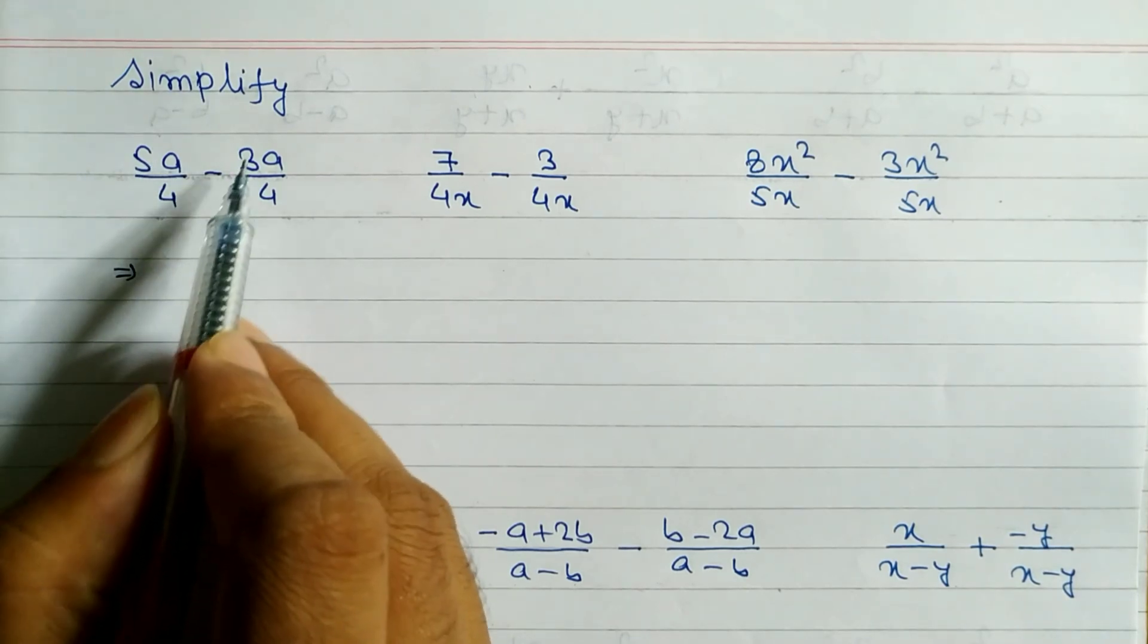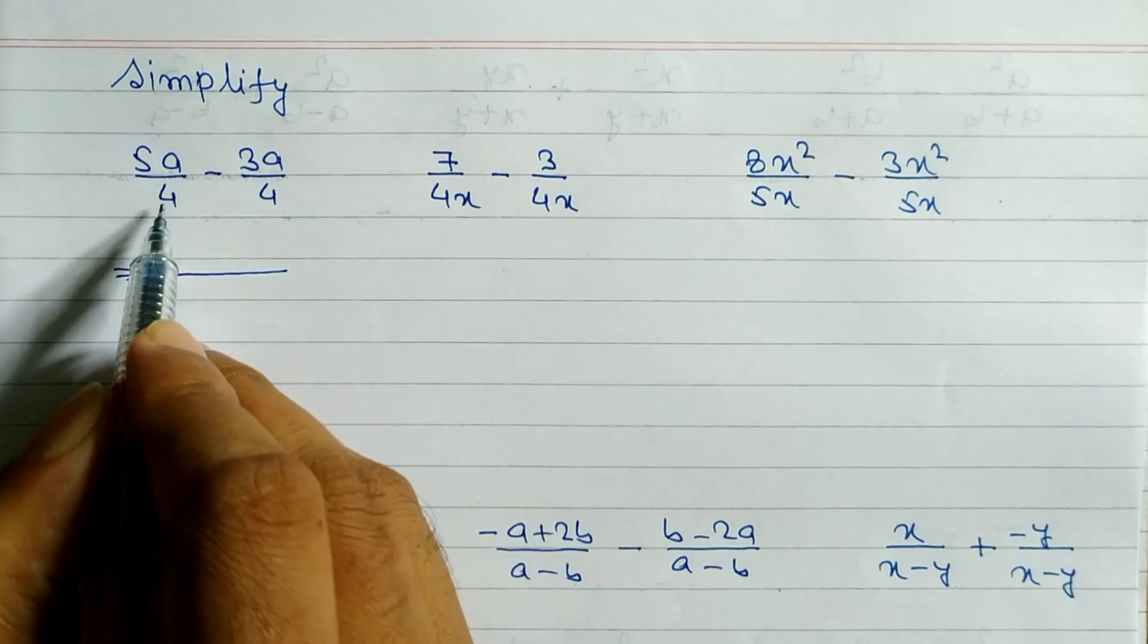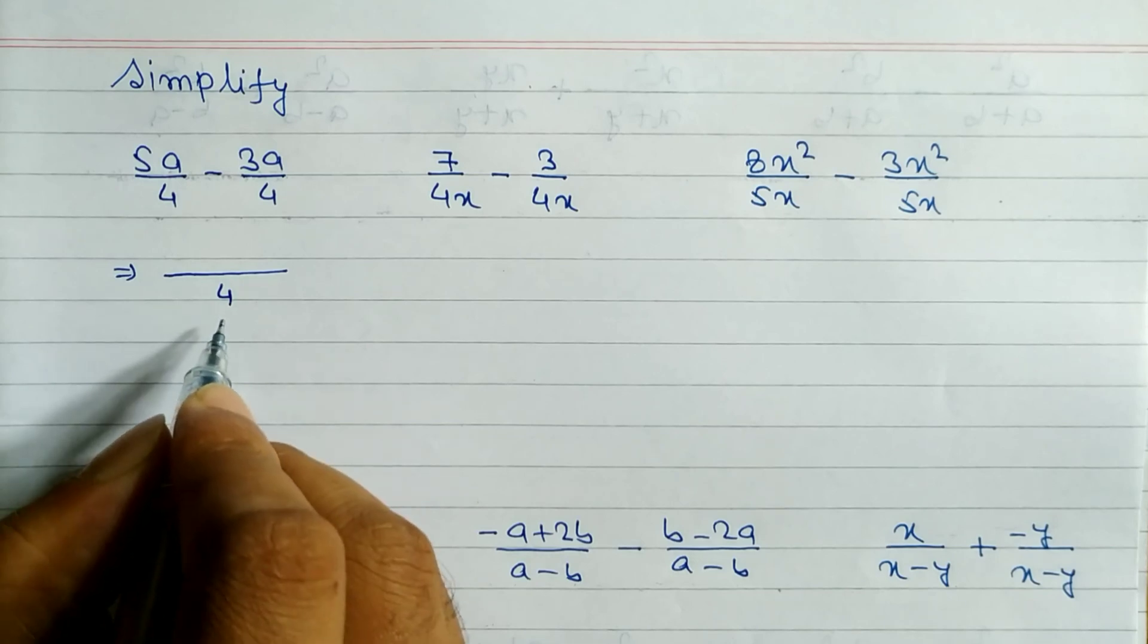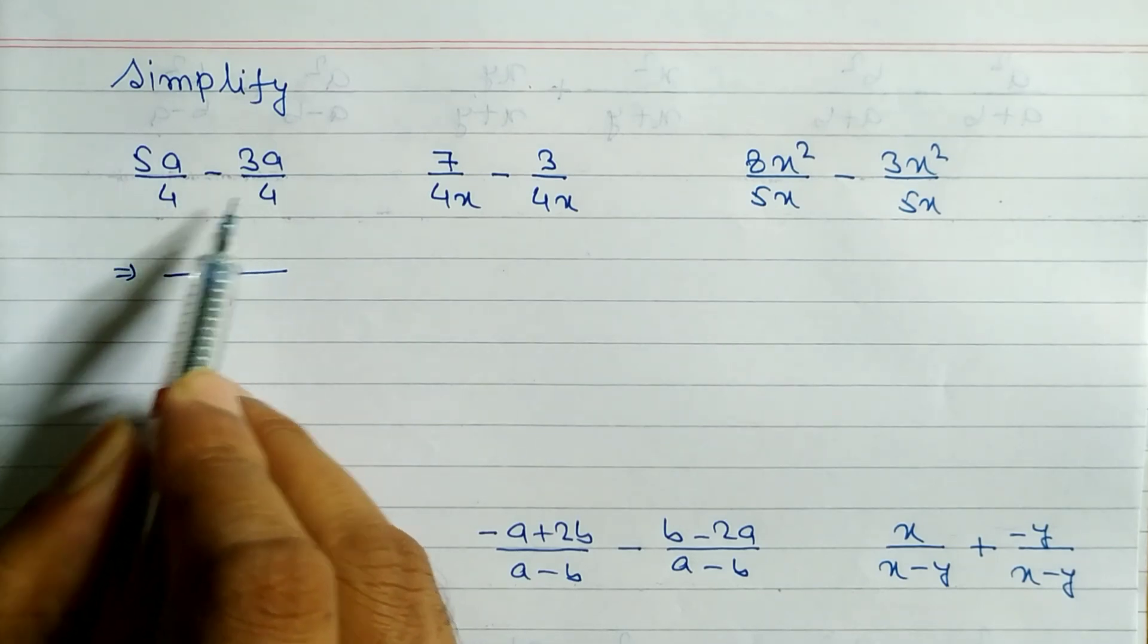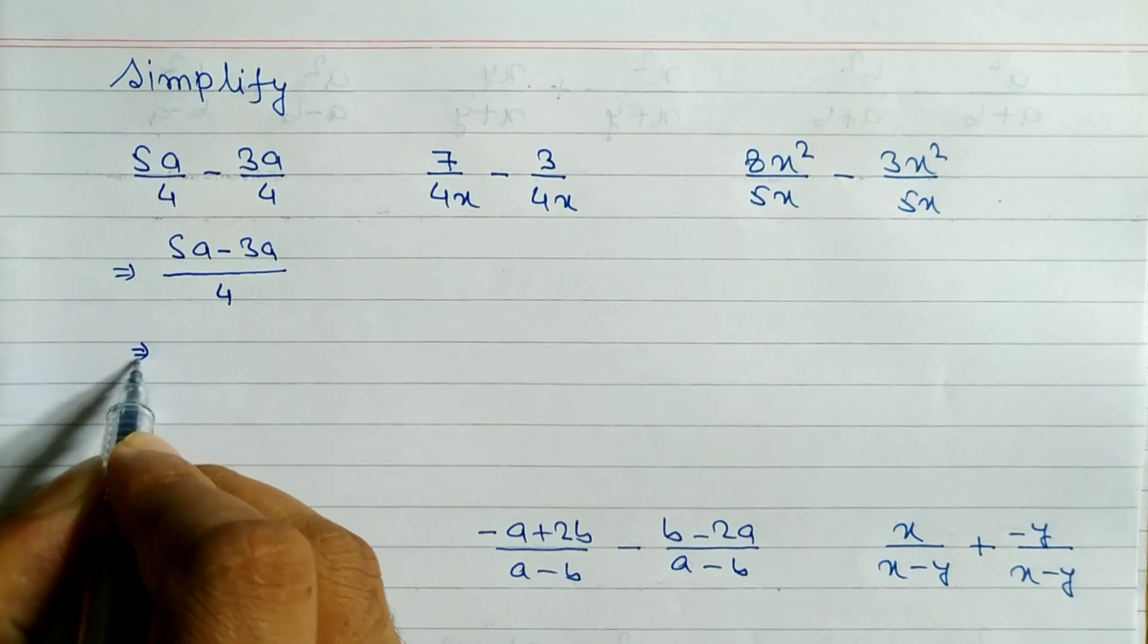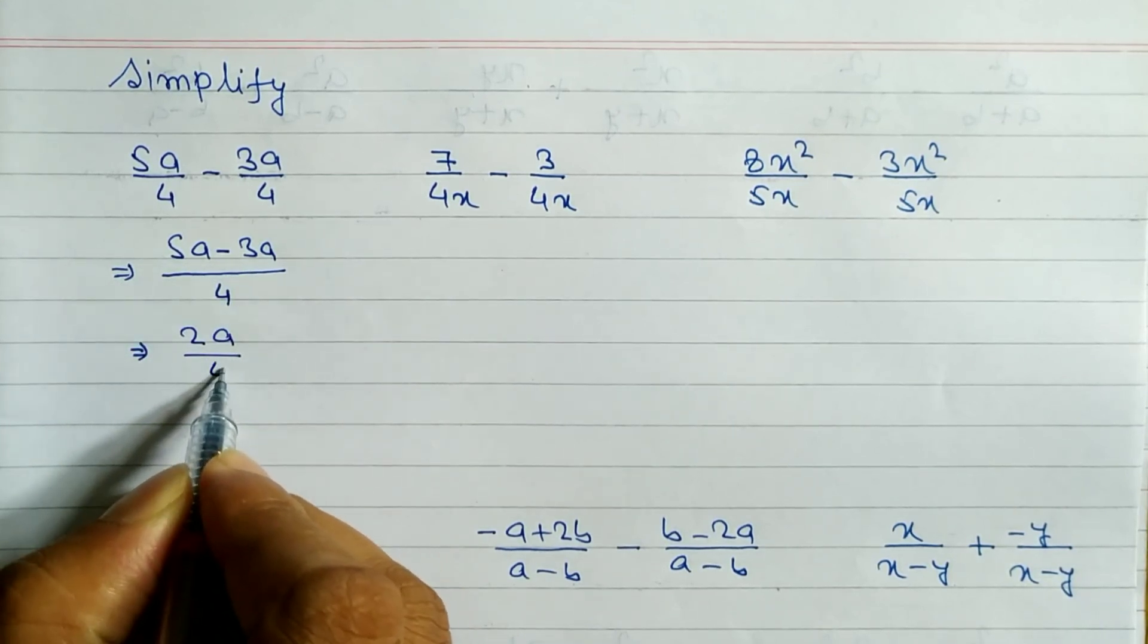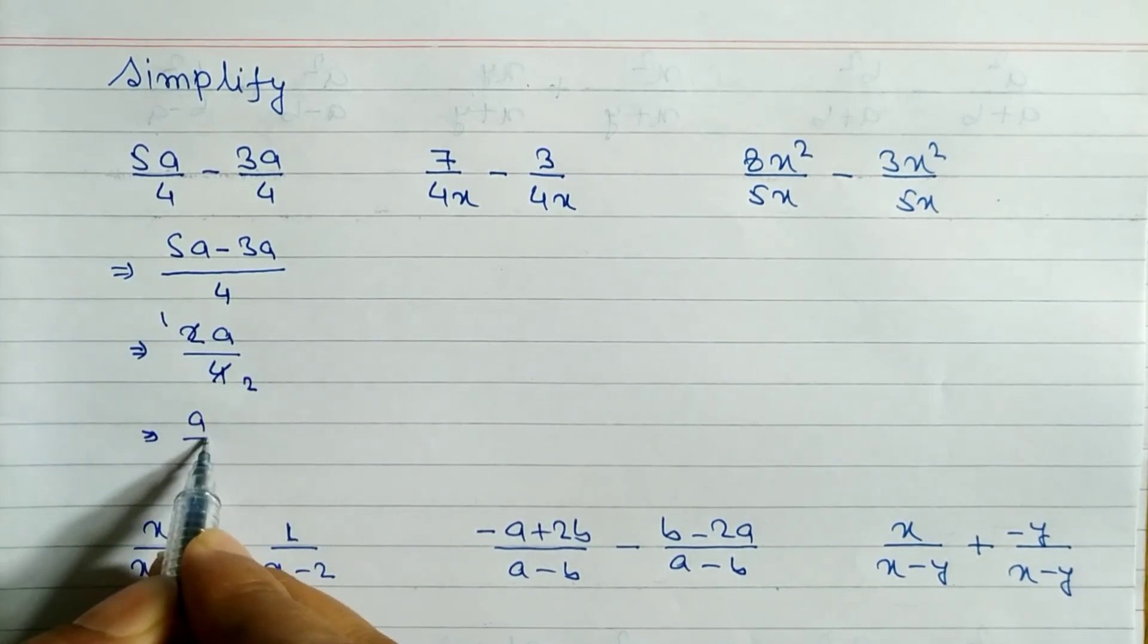You can see here 5a by 4 minus 3a by 4. First of all we have to take LCM. You can see in the denominator both are same, so we have to take common. LCM is equal to 4. One thing to keep in mind: when LCM is same, just write down the numerator. So we can write 5a minus 3a. When you subtract these two like terms, we get 2a divided by 4, which simplifies to a by 2.